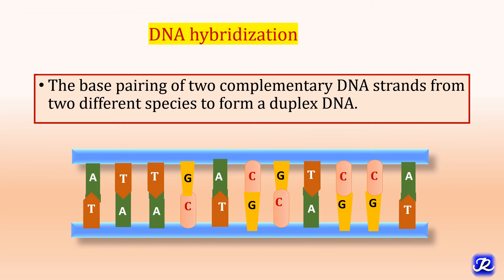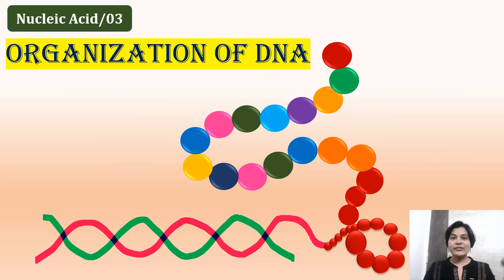The next property of DNA is DNA hybridization — the base pairing of two complementary DNA strands from two different species to form a duplex DNA. In the next video, we will study how in a cell an extraordinary degree of organization is required to pack two-meter-long DNA into a tiny nucleus of 10 micrometer size. Till then, have a great time. Happy learning and thank you for watching.